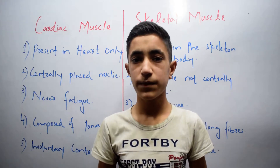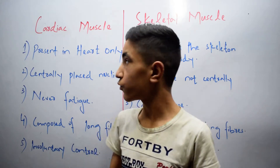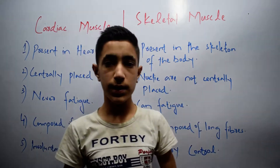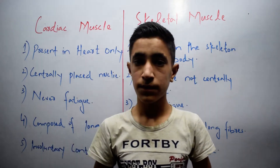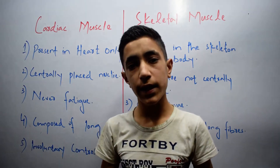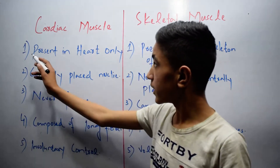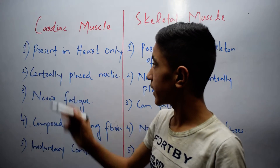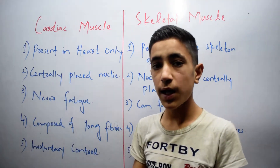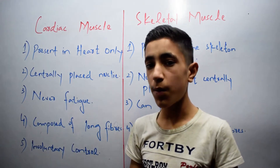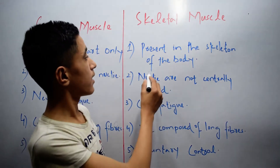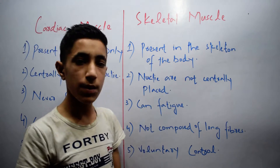Let's talk about the difference between cardiac muscle and skeletal muscle. The first difference is that cardiac muscle is present in the heart only — it is not present in any other part of the body — while skeletal muscle is present in the skeleton of the body.